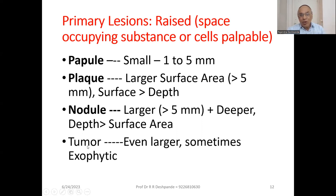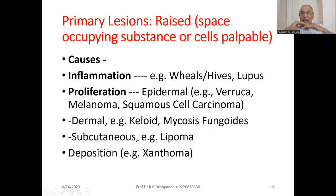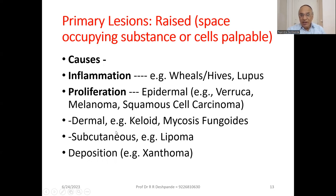What are the causes of these elevated types of pathology in the skin? Number one: inflammation — there may be wheals or hives, there may be lupus. Proliferation — epidermal proliferation like verruca melanoma, squamous cell carcinoma. Dermal proliferation like keloid, mycosis fungoides. Some terms are a little difficult and some are not common, but as a theoretical part you must remember these particular terms and examples.